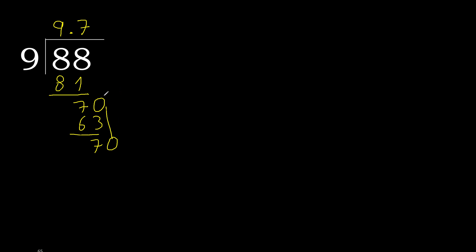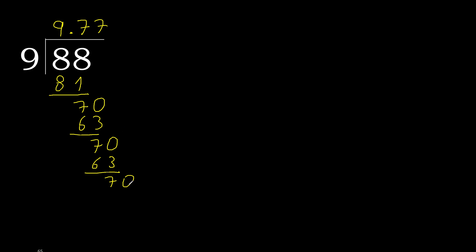Always complete with 0. Point is here. 70 multiplied by 7 is 63, subtract — complete. Repeat, therefore repeat. Therefore 7 — repeat, repeat. Finish it.